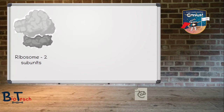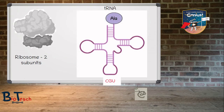The next stage is translation. In both eukaryotes and prokaryotes, translation occurs at the ribosomes in the cytoplasm. Ribosomes are made up of complex ribosomal RNA and proteins, and they exist as two separate subunits until they are attracted to a binding site on the mRNA molecule, where they join together. Ribosomes have binding sites that attract transfer RNA molecules loaded with amino acids. These tRNA molecules are a clover-shaped molecule of about 80 nucleotides in length, with an amino acid attached at one end and an anticodon region at the bottom.